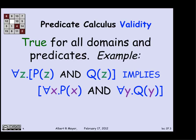So when you say it that way, the sense that this is a fundamental logical fact that doesn't depend on what P and Q mean or what the domain is, it's just a fact about the nature of the meaning of the for all universal quantifier and the connectives and implies.